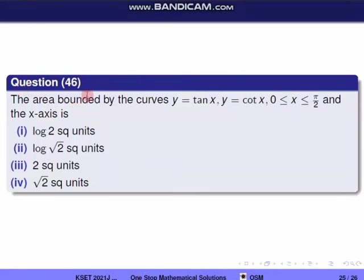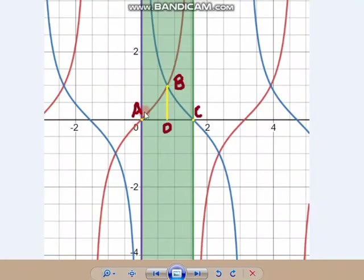Next question, question 46. Find the area bounded by the curves y = tan x, y = cot x, for 0 ≤ x ≤ π/2, and the x-axis. We will plot these regions: tan x as the red curve and cot x as the blue curve.